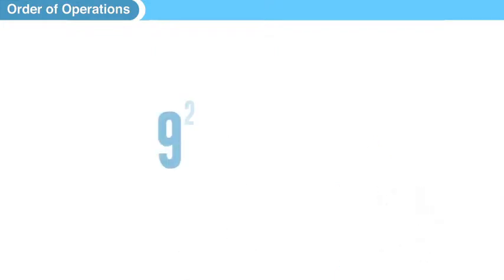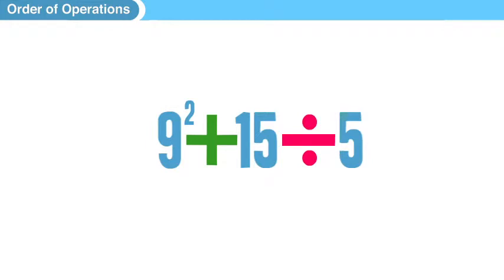So here we have a nice expression, 9 squared plus 15 divided by 5. And the big question that mathematicians always have is what order should we attack that problem? Should we do the 9 squared first? Should we add 9 plus 15 and then square it? Those sorts of things.